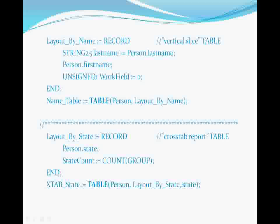In either case, its record structure is the key. Unlike a simple dataset record structure that only needs to provide the data type and field name for each field, the record structure for use by TABLE also requires a third piece of information about each field — the source of the data. The first field in this record structure explicitly defines all three items: the data type, the field name, and the source of the data.